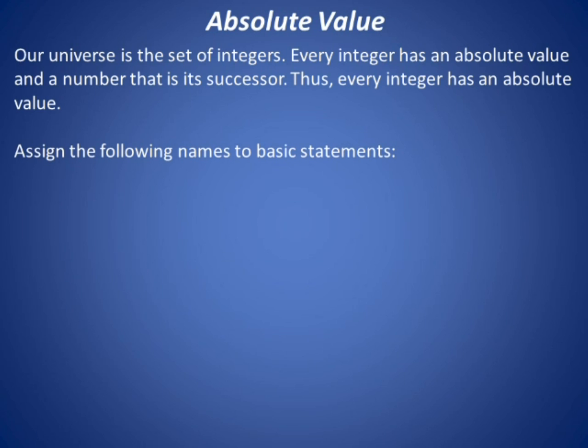Let's begin by defining these predicates. A of x means x has an absolute value. S of x means x has a successor.